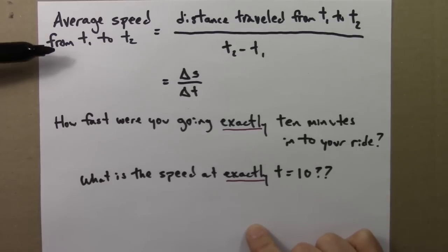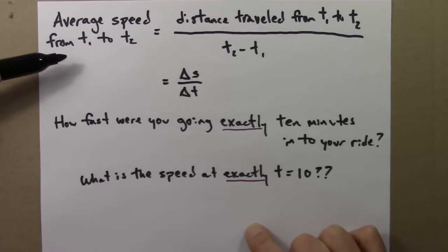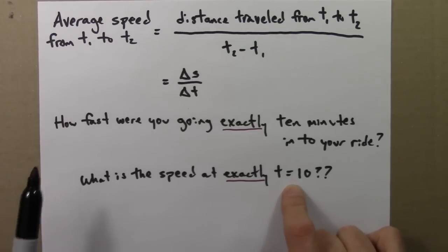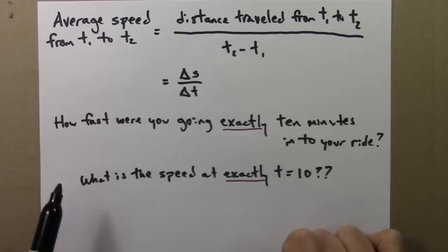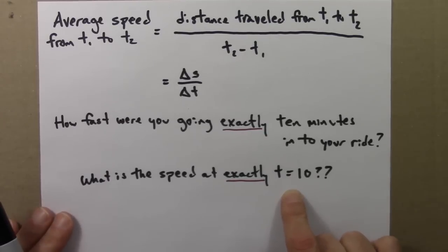Well, we know how to calculate the speed using this formula. But this formula requires 2 times, and we're really only given 1. This is over some time interval from t1 to t2, but I want to know the time at exactly 10. So we're in a little bit of a bind, and calculus, and this idea of a derivative, is going to get us out of the bind.